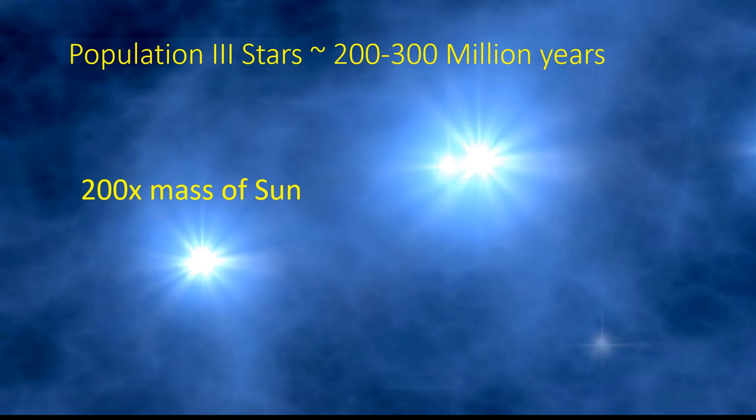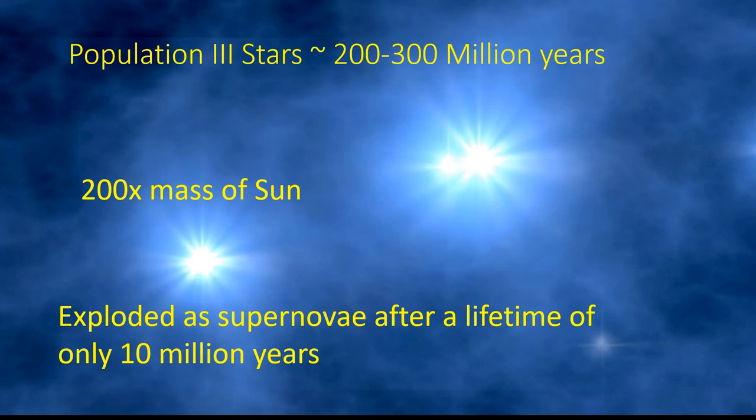They ended their lives in massive explosions called supernovae, in which the star was completely destroyed. These supernovae spread the elements like carbon throughout the cosmos.